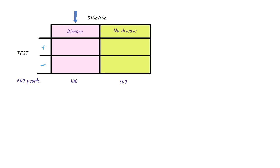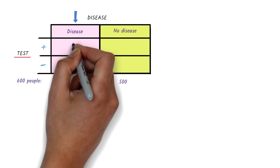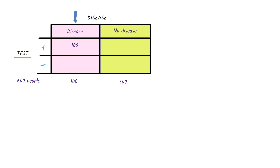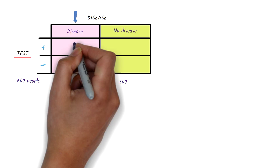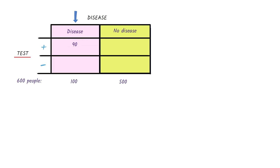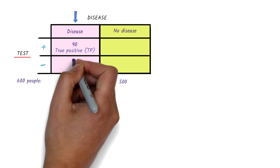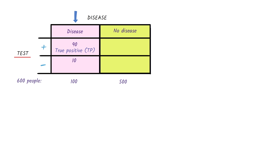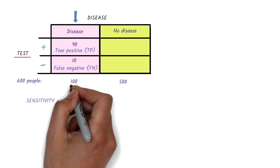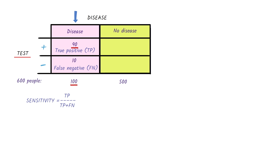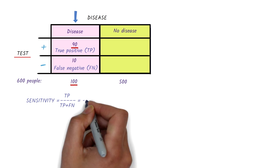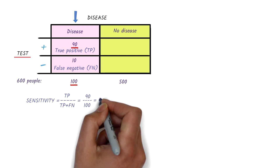Let's say that we do a test on people with the disease. If that test were perfect, we would have 100 positive tests. However, let's assume that the test is positive in only 90 people — in other words, there are 90 true positive cases. This leaves us with 10 people with the disease who have a negative test result; these are false negatives. We know that the sensitivity of the test is the proportion of people with the disease who test positive for it. Therefore, in this example, the sensitivity of the test is 0.9, or 90%.